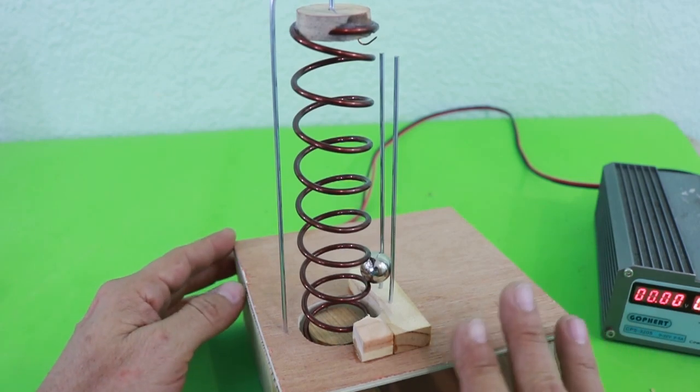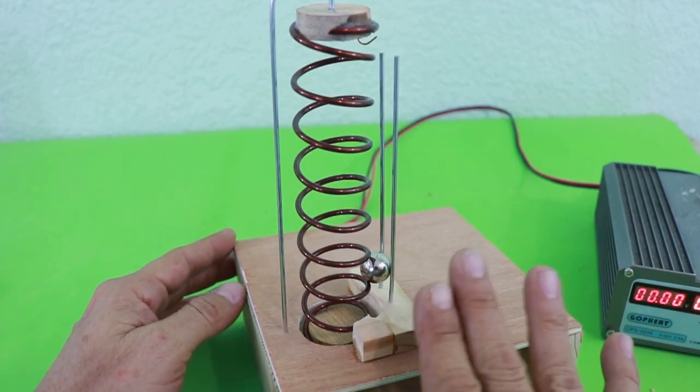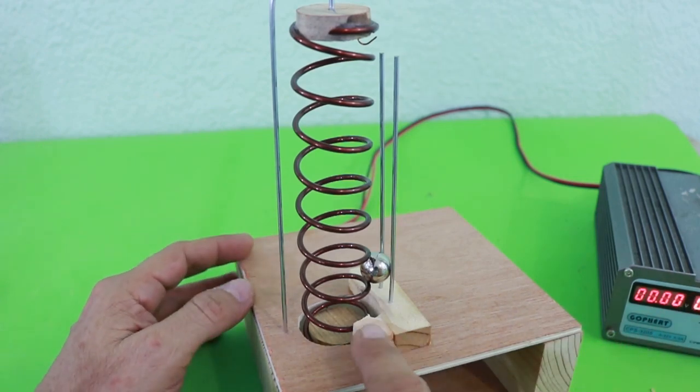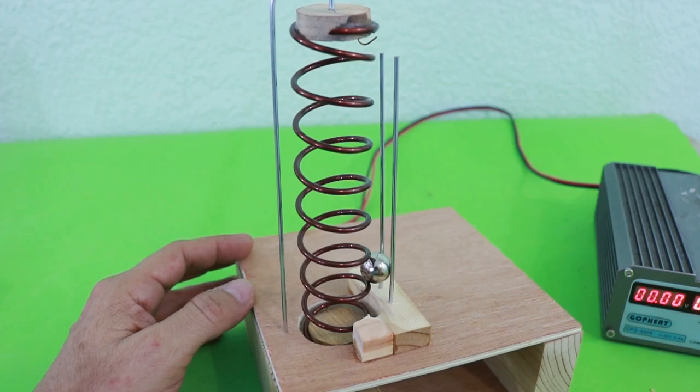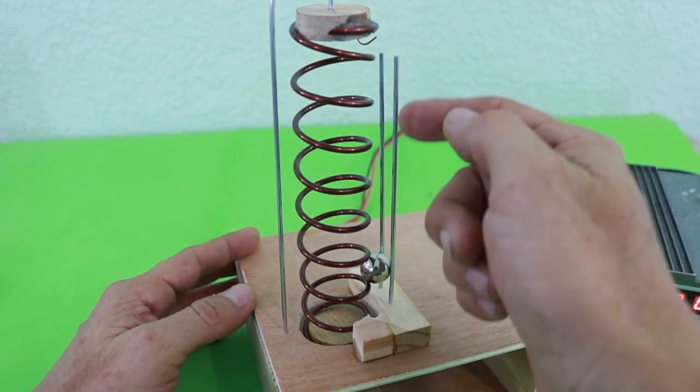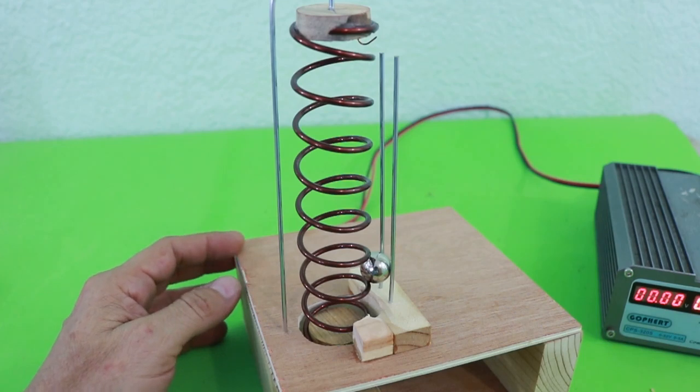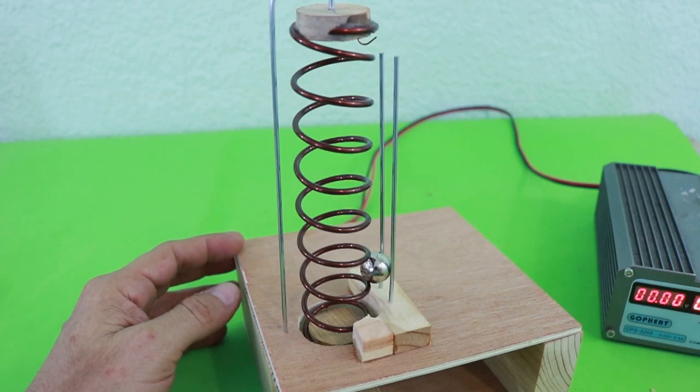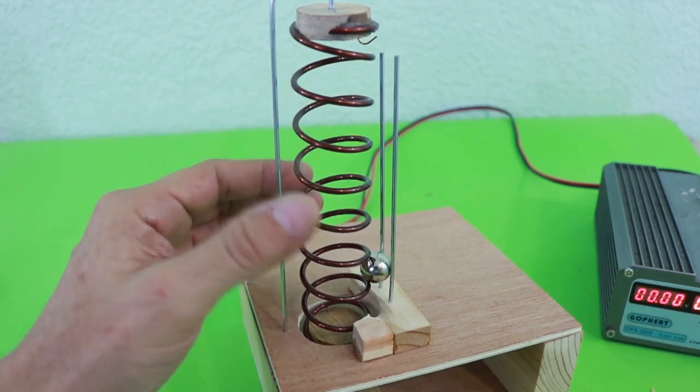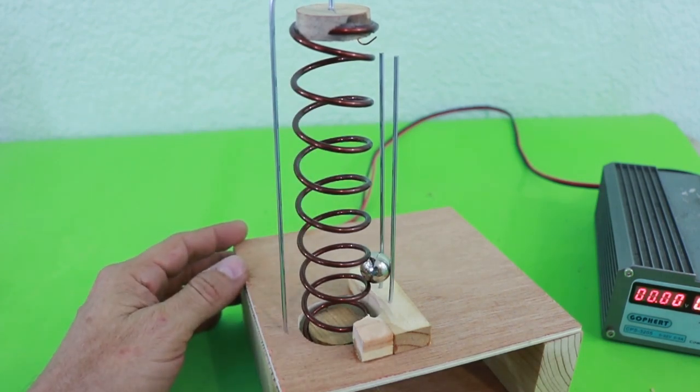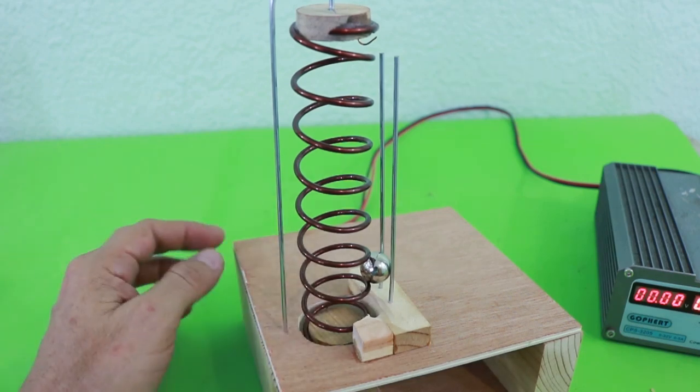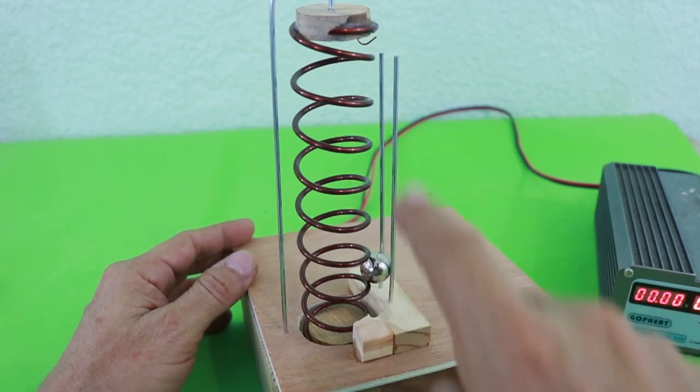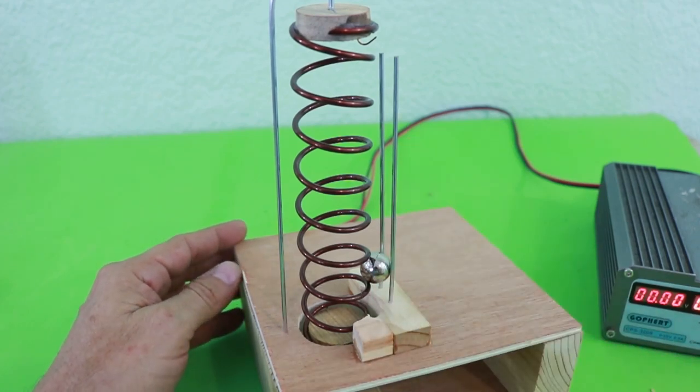For this first video I made the elevator mechanism. It is relatively simple. It is based on this spring or spiral and two guiding rails. The steel ball rests between the spiral and the rails, and the spiral is connected to a gear motor for slow speed. When the spiral turns it makes the ball go up along with the rails.